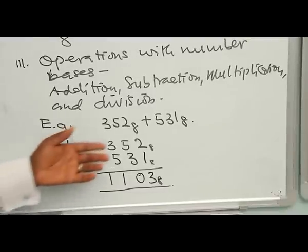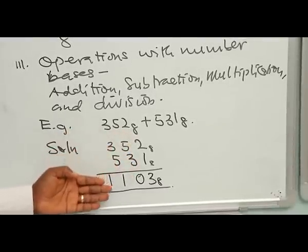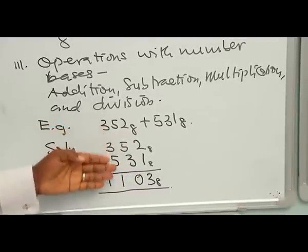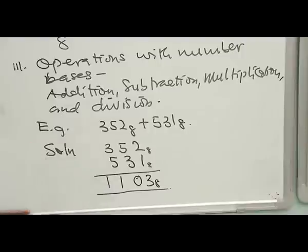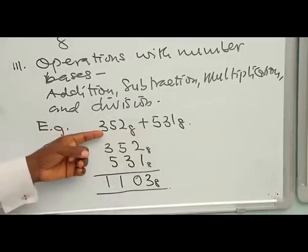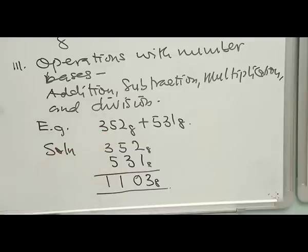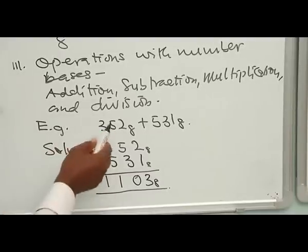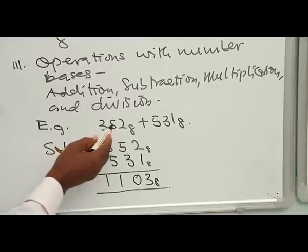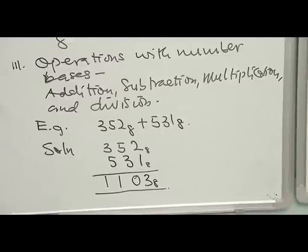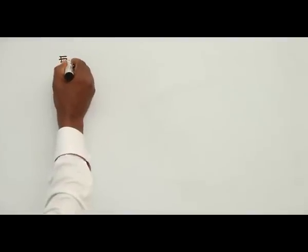Remember that even in base 9 you follow the same method, but you cannot use digits of 5 or above in base 5, because in base 5 you can only have digits 0, 1, 2, 3, and 4. Take note of that.